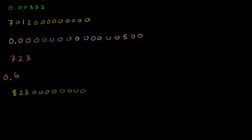So for 0.00852, if we want to write it in scientific notation, we want to figure out the largest exponent of 10 that fits into it. We go to its first non-zero term and count how many positions to the right of the decimal point we have, including that term — that's 1, 2, 3. So it's going to be equal to 8.52 times 10 to the minus 3.